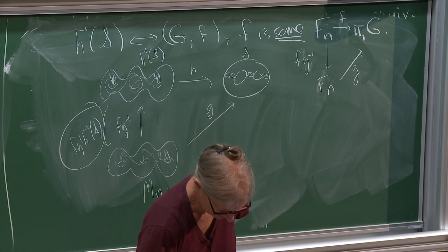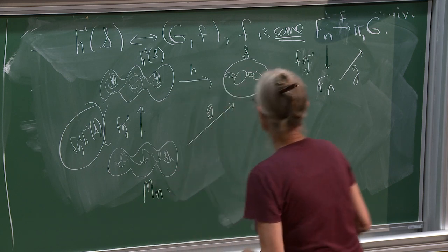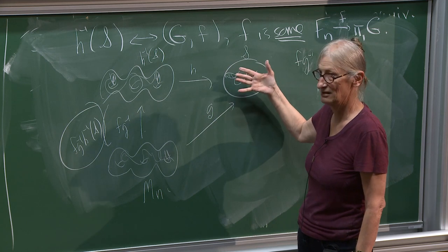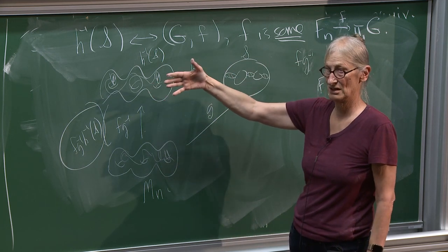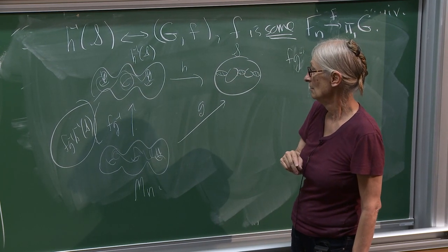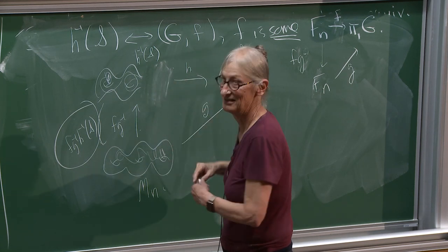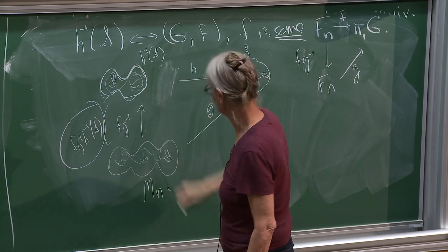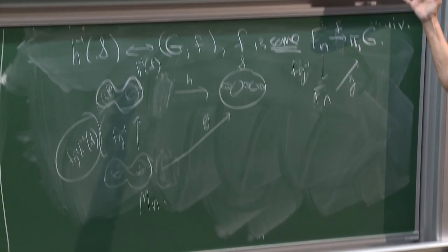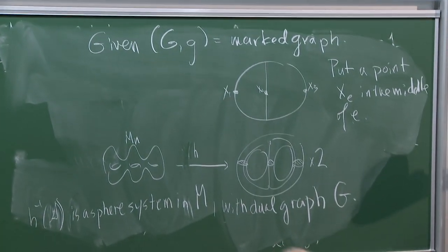Could you explain the map H again? I just chose an arbitrary homeomorphism H. I know that this handle body, when doubled, is homeomorphic to my standard fixed Mn. So I choose a homeomorphism. I drew the picture wrong — this should only have two bumps. This is the handle body of genus 2; when I fatten up that graph I get a handle body of genus 2, and when doubled it's homeomorphic to a doubled handle body of genus 2.